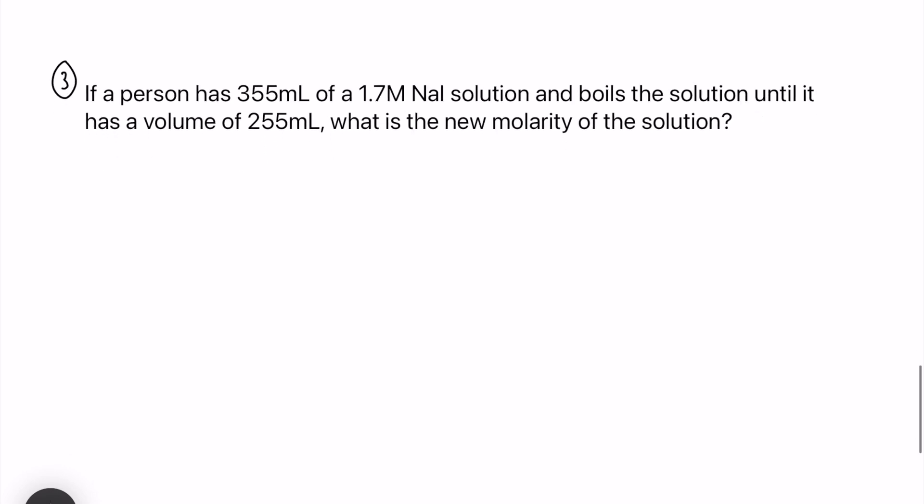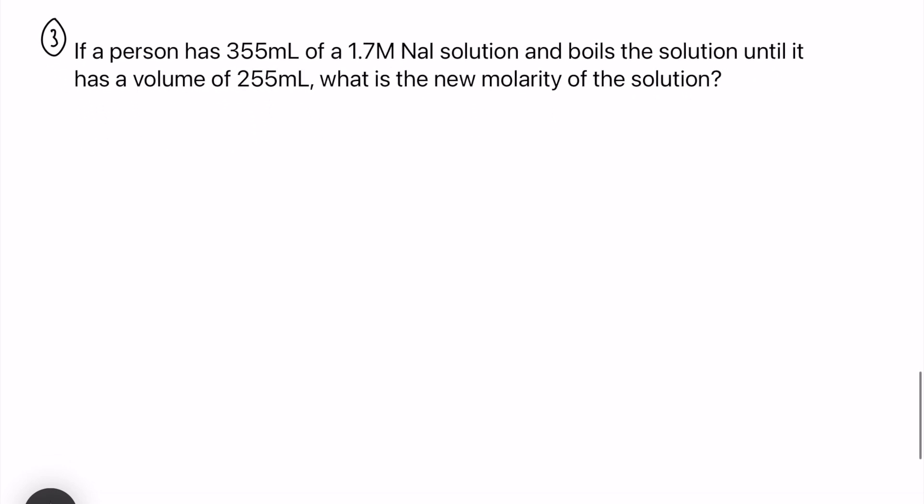All right, last example here we have number three. It says if a person has 355 milliliters of a 1.7 molar sodium iodide solution and boils the solution until it has a volume of 255 milliliters, what is the new molarity of the solution? So let's fill out our variables list and we will go through this question.